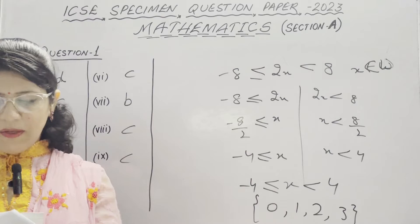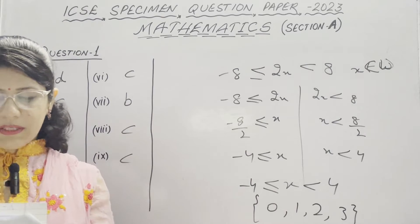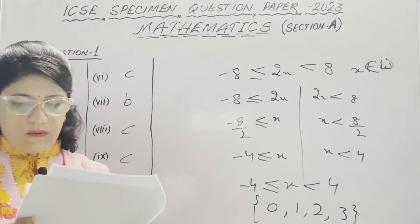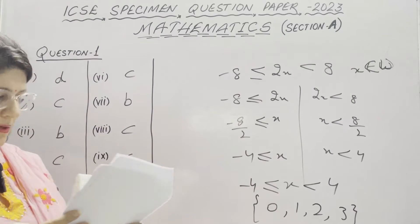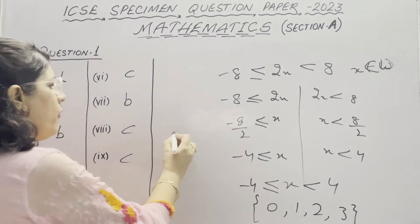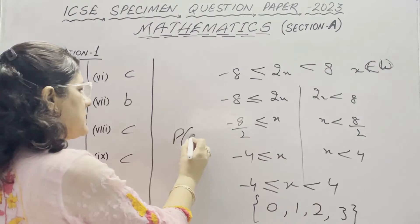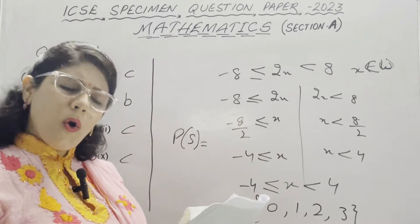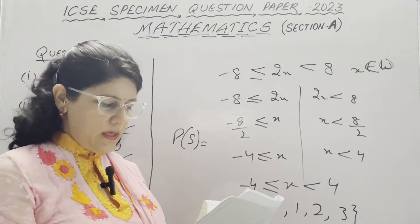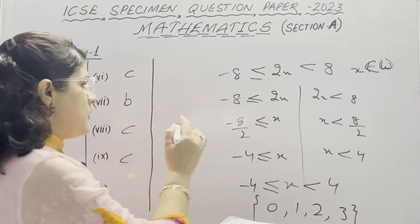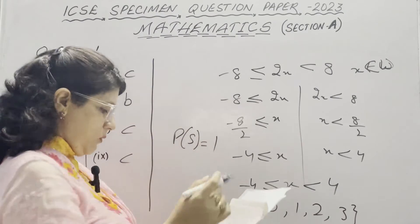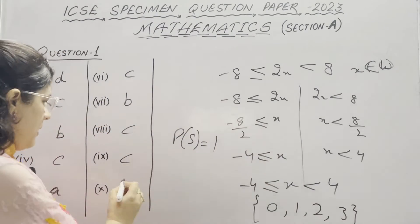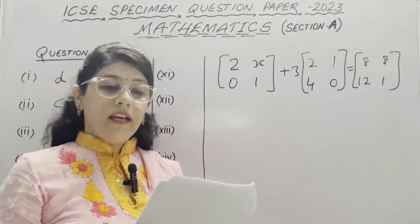In Part 10, the probability of the sun rising from the east, P(s), is asked. Since the sun always rises in the east, the probability is 100%, so P(s) equals 1. This is option C.